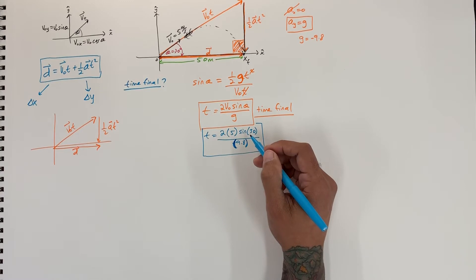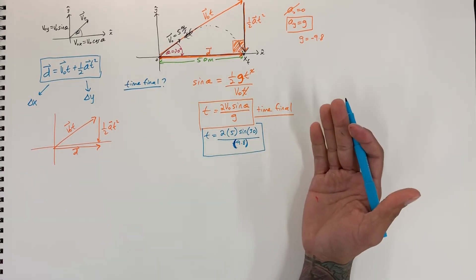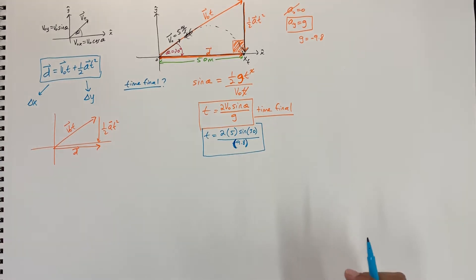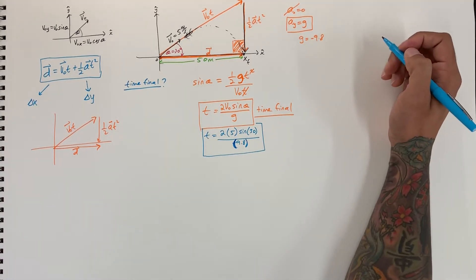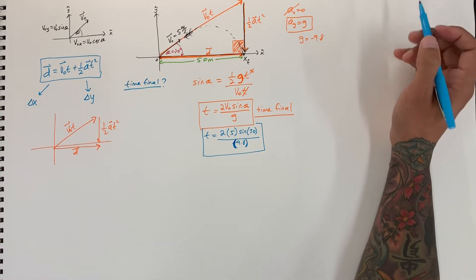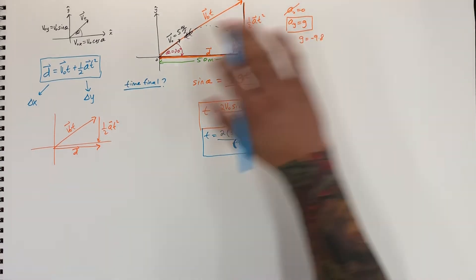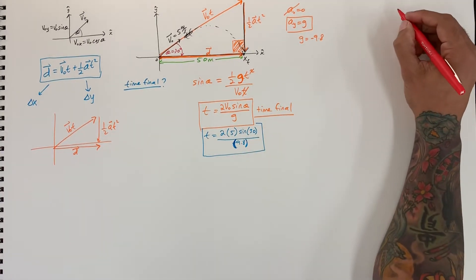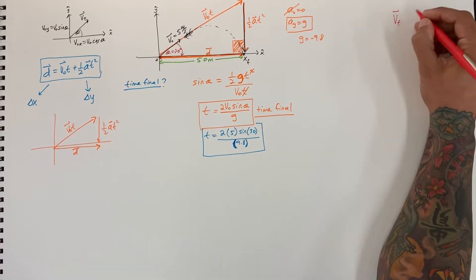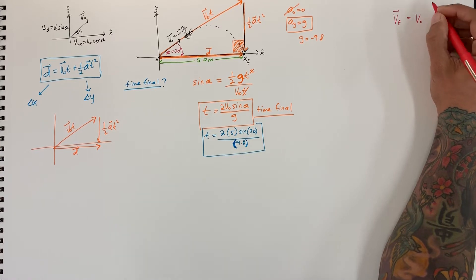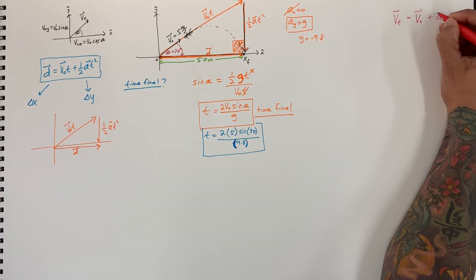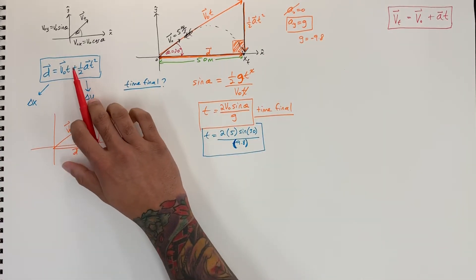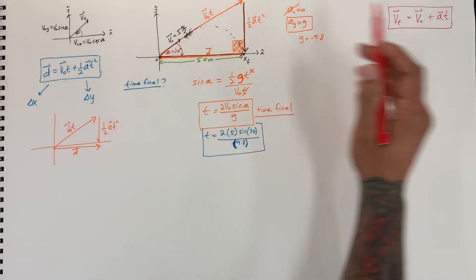Now I want to show you the other way to find it using kinematic equations, to show how much more work it involves. We have another vector equation: V-final equals V-initial plus acceleration times time. This is the same form as the displacement equation but with different values, and it's still a vector equation.